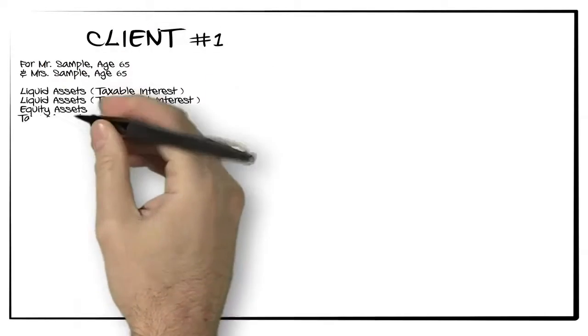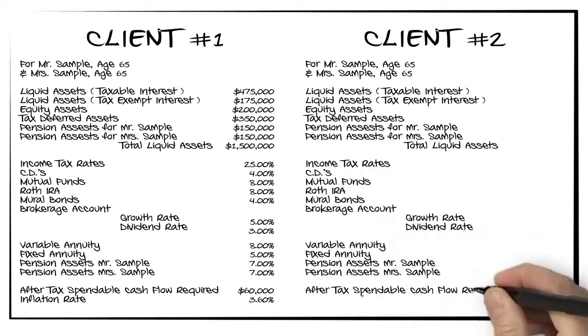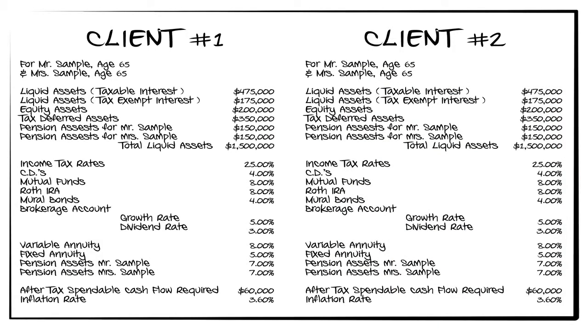To illustrate, we have put together two scenarios reflecting the use of liquid asset priority and the other without. Each scenario is identical in every way. Same account types, fees, returns, and beginning balances. Furthermore, each scenario reflects the same desired income, inflation rates for the same amount of years, and the same exact tax brackets.